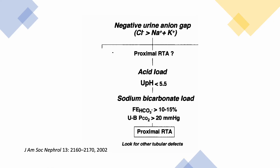To summarize the workup for proximal RTA: first, you have non-anion gap metabolic acidosis. Then you exclude other causes like diarrhea and laxative abuse. You have a negative urine anion gap, meaning chloride is more than the sum of sodium and potassium. If you give an acid load, the patient can acidify their urine and can drop their urine pH below 5.5 or below 5.3.